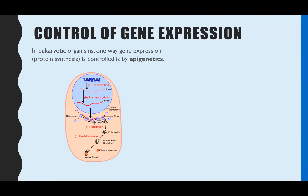Epigenetics is one of the examples of gene expression. Gene expression is when the DNA or a gene is expressed — in other words, a protein is created. Gene expression includes transcription and translation. In eukaryotic organisms, one way that gene expression or protein synthesis is controlled is epigenetics, and we're going to look at how epigenetics controls gene expression by either initiating or preventing transcription.